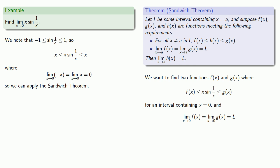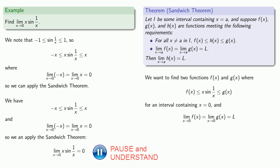And so we can put it all together. We have negative x is less than or equal to x sine of 1 over x, which is less than or equal to x. And the limit as x approaches 0 of minus x is the limit as x approaches 0 of x, and both of these are equal to 0. So because the slices of bread go to 0, then the meat also has to go to 0. And we get the limit as x approaches 0 of x sine of 1 over x equals 0.